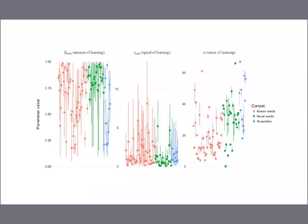These plots show the 95% highest density interval for the posterior distributions of individual-level parameters for all subjects reliably classified as learners. Each dot is the median of the posterior for a particular individual and the lines show uncertainty in the posterior; colors represent different conditions. The amount of learning and the rate of learning do not seem to systematically vary by condition. However, the onset of learning does — people show evidence of learning earlier in the experiment for the known words condition than for novel words or scrambled words. Notice also that the onset of learning is typically in the middle of the experiment, not at the beginning — even though the model would allow learning to start at the very beginning, that simply isn't what happened.